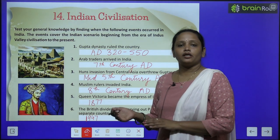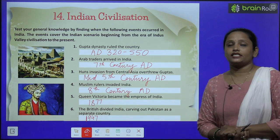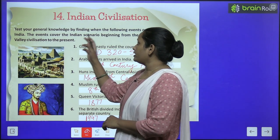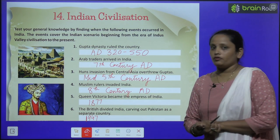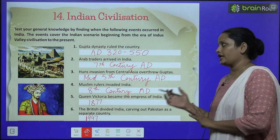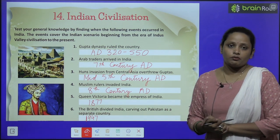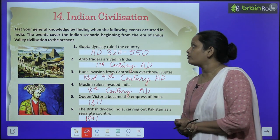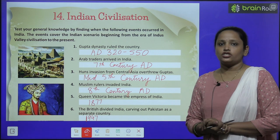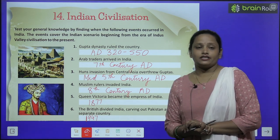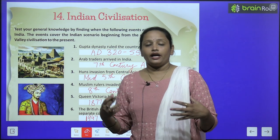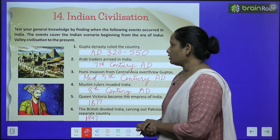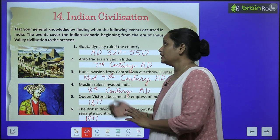Naturally, let's move on to chapter number 14 and the name of the chapter is Indian Civilizations. Test your general knowledge by finding when the following events occurred in India. Aapka batana hai ki ye jo events hai wo kub huye thai India mein. The events cover the Indian scenario beginning from the era of the Indian civilisation to the present. So what you have to do, you have to write down their time.